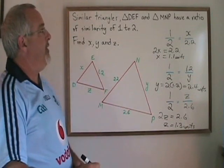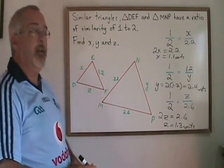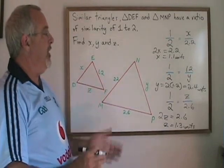We have used a given ratio of similarity and some given side lengths in two similar triangles to find all of the missing sides.